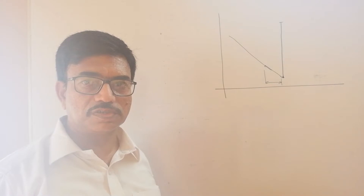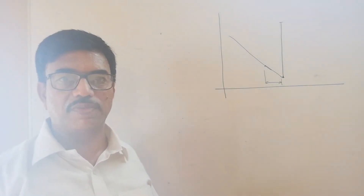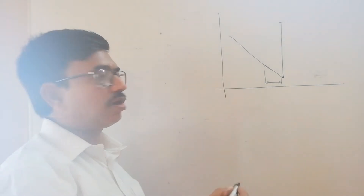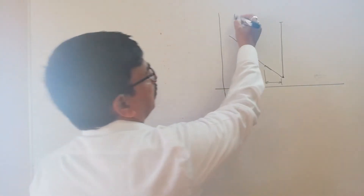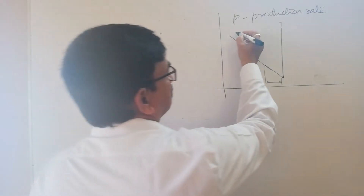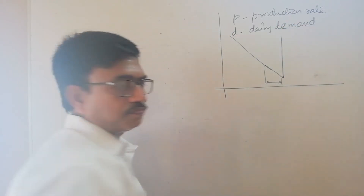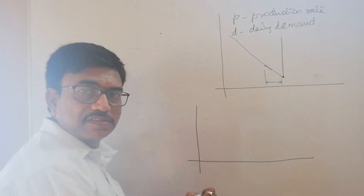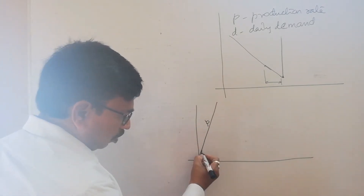On the other hand, suppose if we produce instead of purchasing the item from suppliers — if we produce within the organization using the available facilities — in such case the production may not be instantaneous. Within a day or two we cannot accumulate the required quantity. Suppose there is some production rate P, and D is the daily demand. If you produce without any consumption at a rate P, then the inventory level will raise from 0 to this particular quantity.